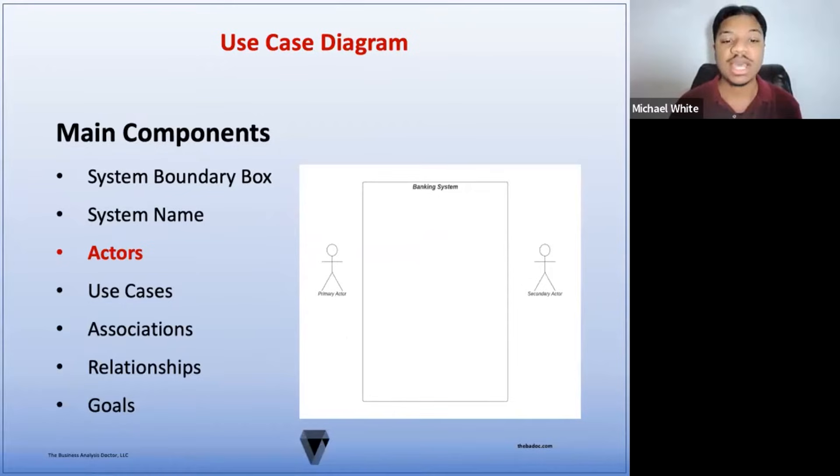Generally, there are two types of actors, primary and secondary. Primary actors are located on the left side of the system boundary box, while secondary actors are located on the right side of the system boundary box.